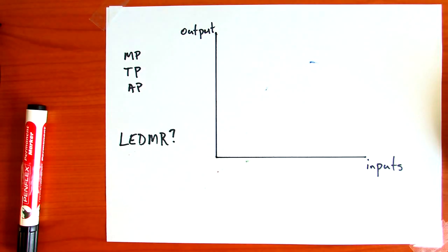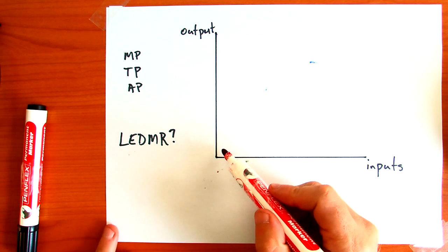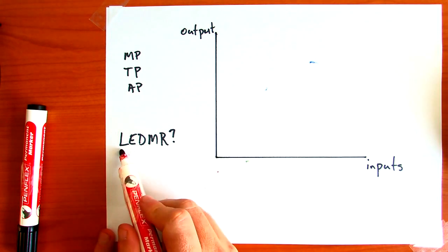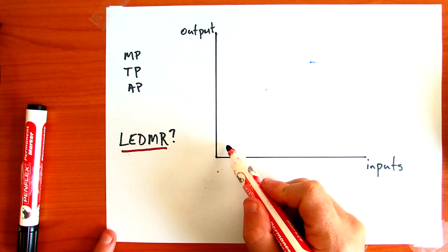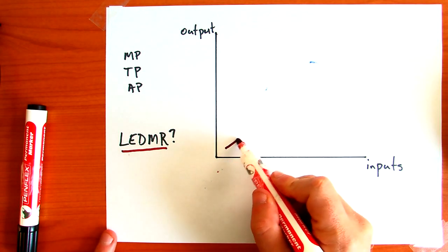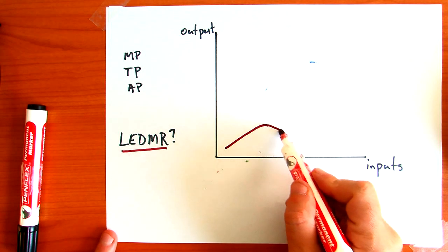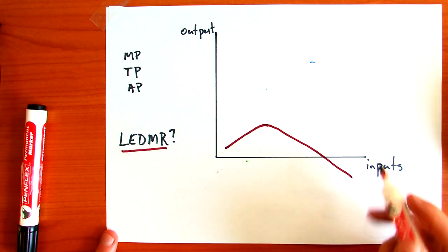We're going to start with marginal production. Marginal production, remember, is governed by the law of eventually diminishing marginal returns. So we see marginal production first increase, and then begin to decrease, and it will eventually become negative.